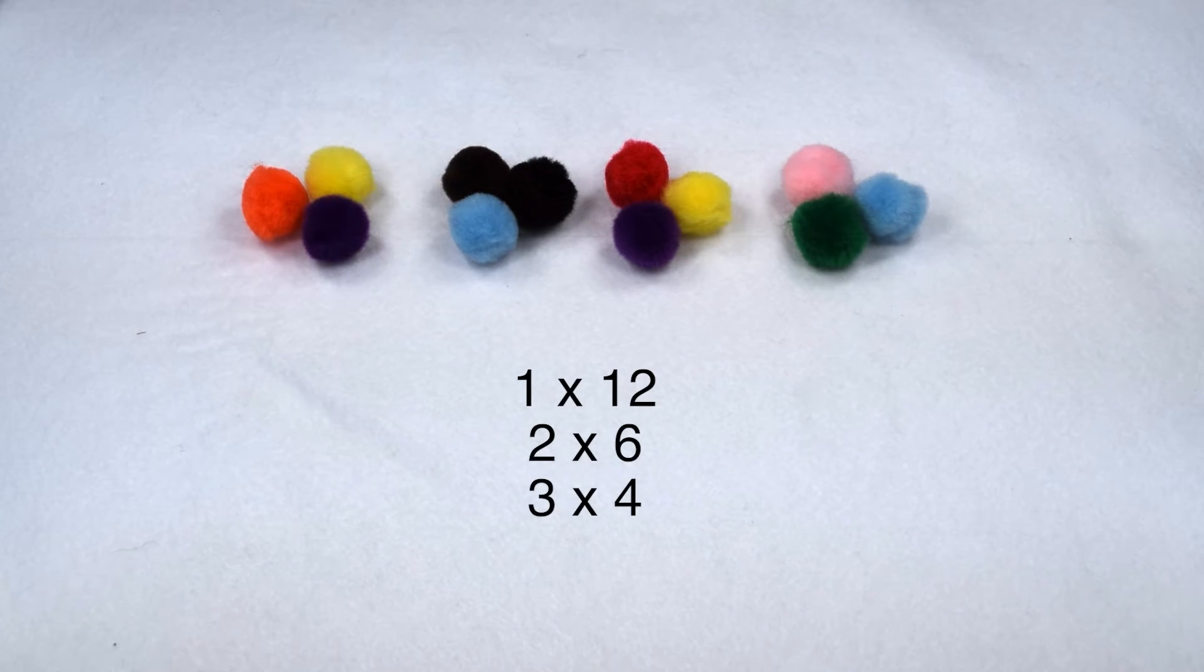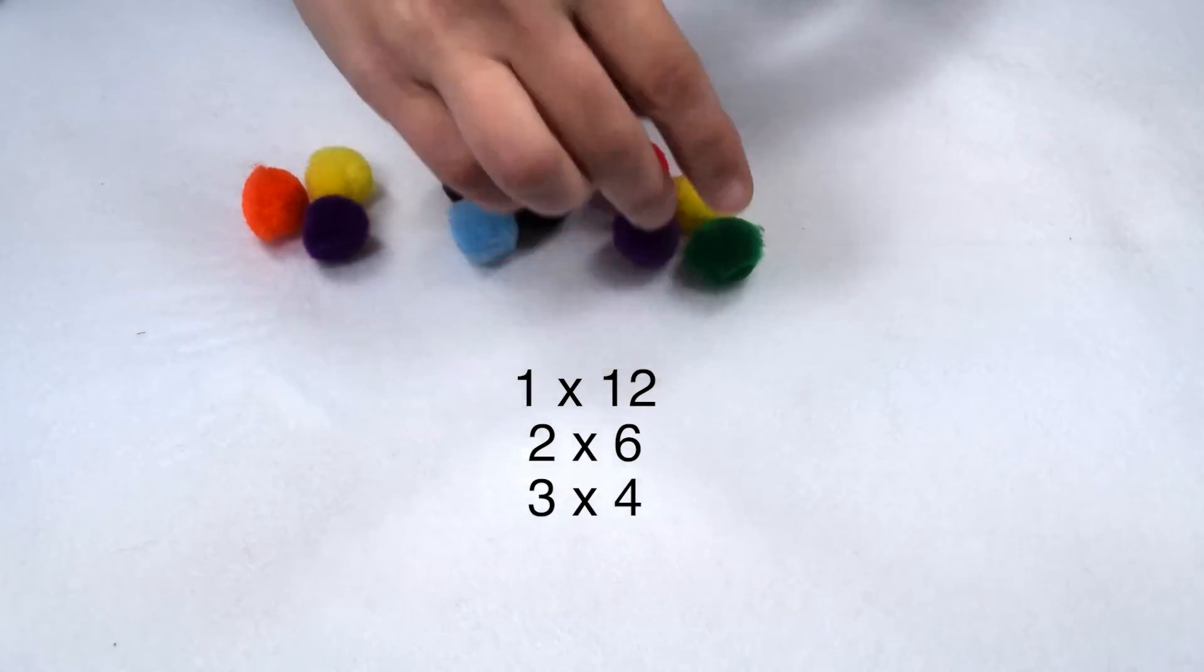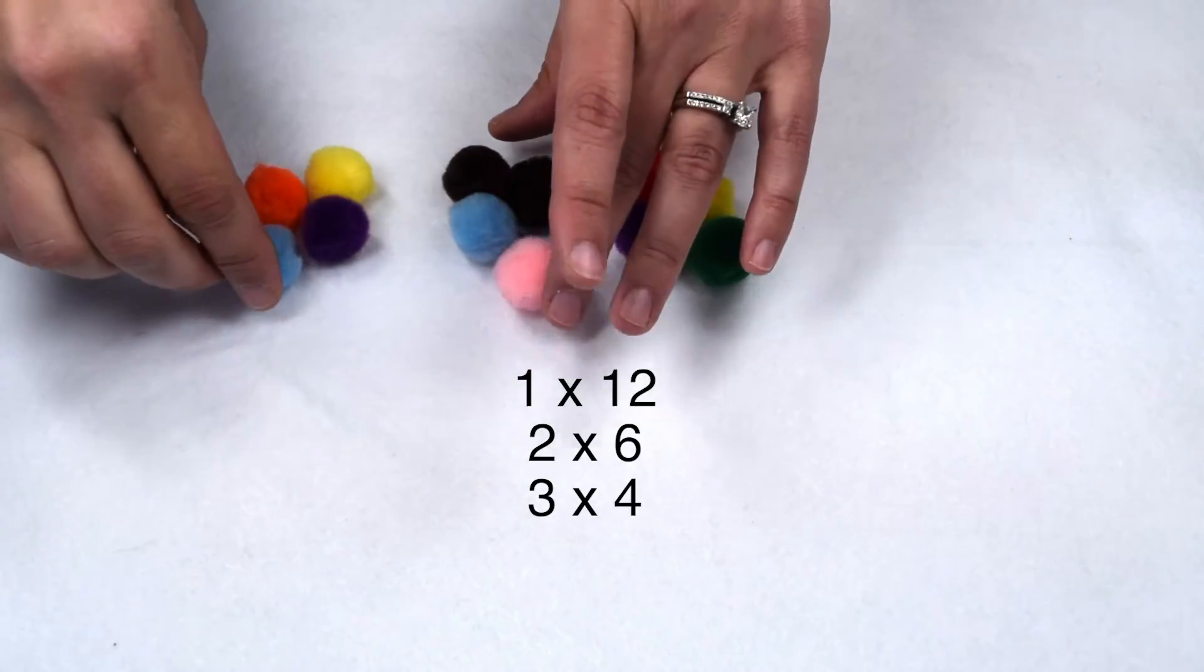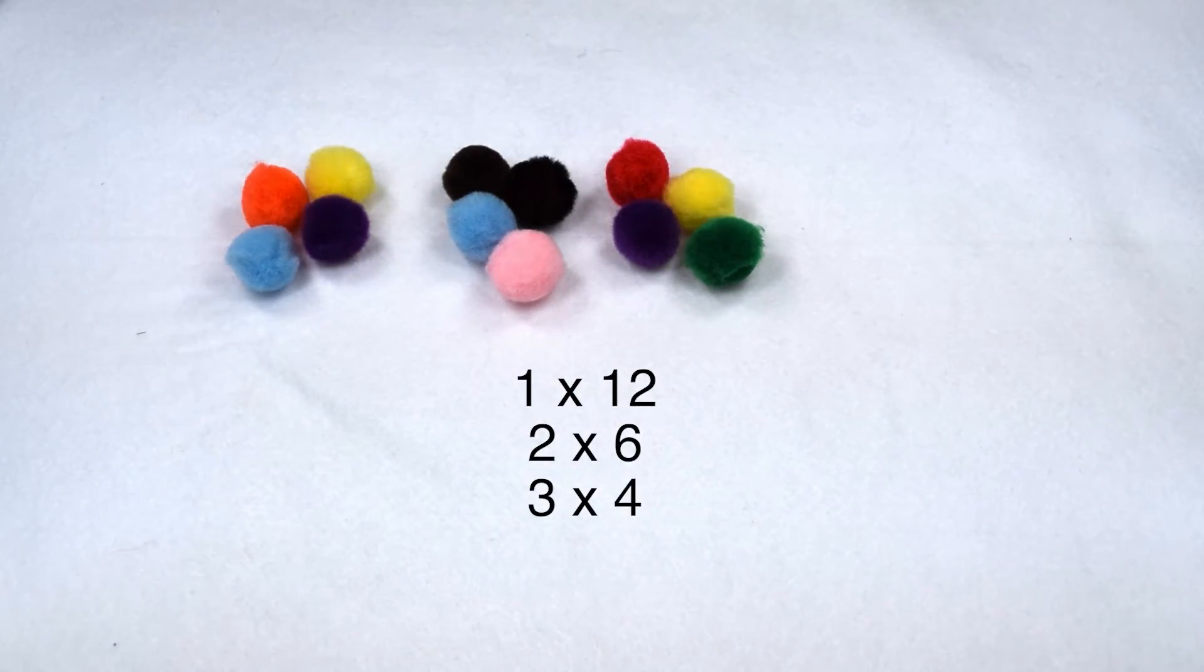The next number we would check would be 4. 4 is already on our list paired with 3 and we can see at this point if we rearranged it so that we put four items in each group we would make three groups. Since we're starting to repeat the factors on our list we know we have them all.